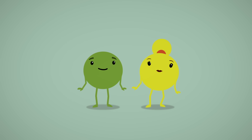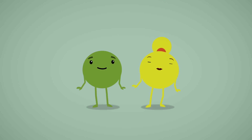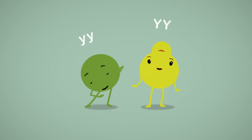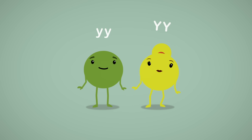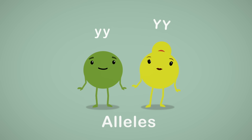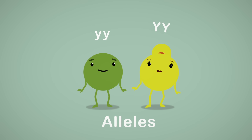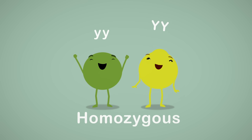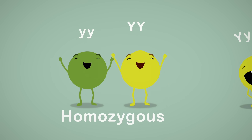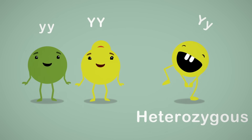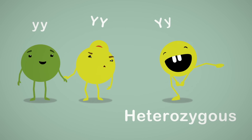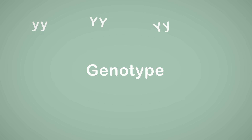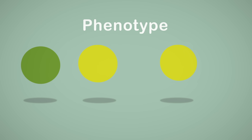From those results, Mendel inferred that each trait depends on a pair of factors, one of them coming from the mother and the other from the father. Now we know that these factors are called alleles and represent the different variations of a gene. Depending on which type of allele Mendel found in each seed, we can have what we call a homozygous pea, where both alleles are identical, and what we call a heterozygous pea, when the two alleles are different. This combination of alleles is known as genotype, and its result — being yellow or green — is called phenotype.